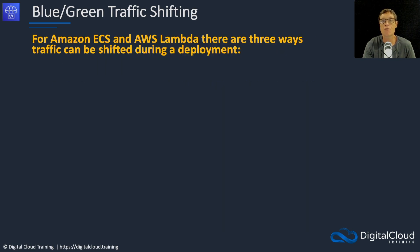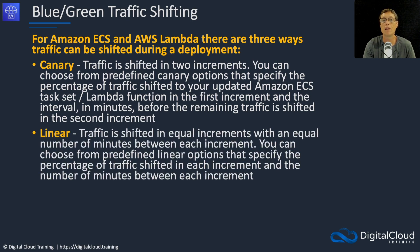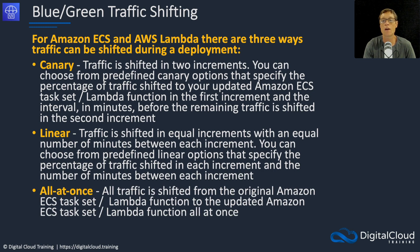For Amazon ECS and Lambda, there are three ways traffic can be shifted during a deployment. First, canary: traffic is shifted in two increments — you choose a predefined option specifying the percentage shifted in the first increment and the interval in minutes before the remaining traffic shifts in the second increment. Then linear: traffic is shifted in equal increments with an equal number of minutes between each increment. Finally, all-at-once: all traffic is shifted from the original ECS task set or Lambda function to the updated version all at once.